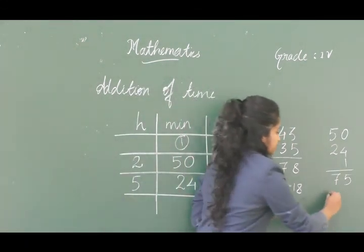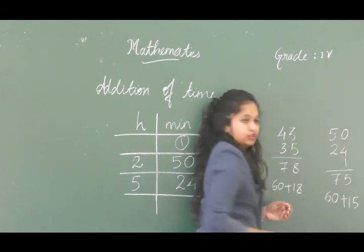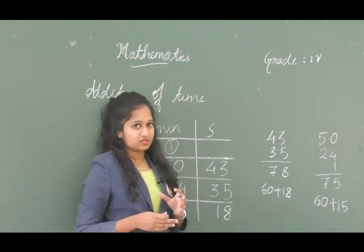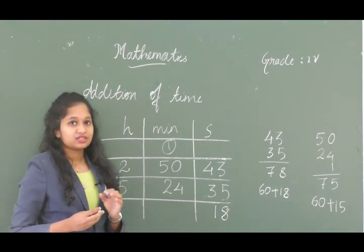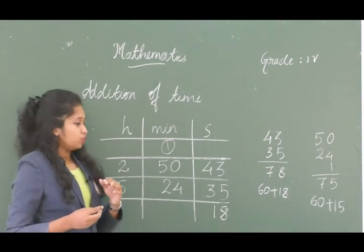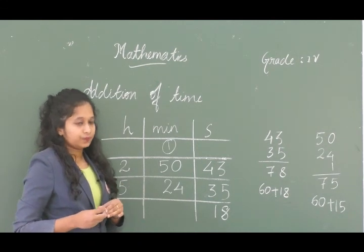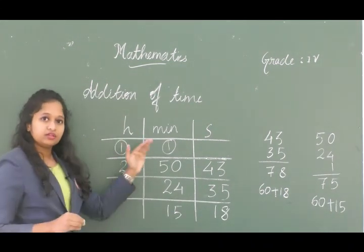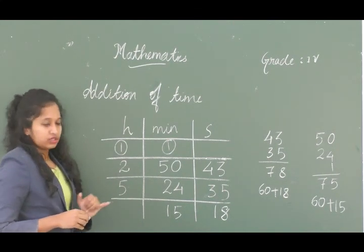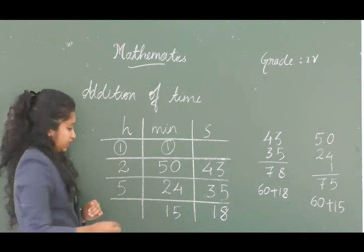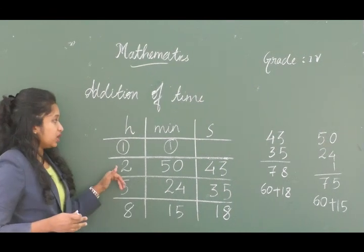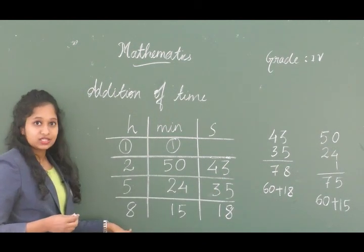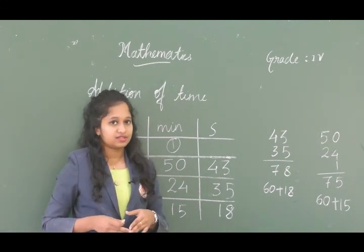75 minutes can be written as 60 minutes plus 15 minutes. Since 60 minutes equals 1 hour, that 1 is carried to the hours column and 15 minutes remains. Now adding the hours: 1 + 2 + 5 = 8. So when you add 2 hours 50 minutes 43 seconds and 5 hours 24 minutes 35 seconds, the answer is 8 hours 15 minutes 18 seconds.